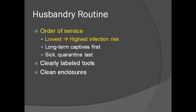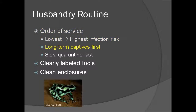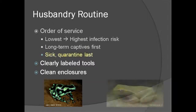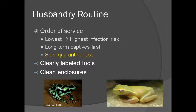In general, it is important to service the enclosures from the lowest risk of infection to the highest. For example, enclosures with long-term captives that have been thoroughly tested for infectious diseases should be serviced first, and sick animals or those in quarantine serviced last. Additionally, sick or dead animals should be removed promptly and medical care sought or necropsy performed. If separate tools are used, they should be clearly labeled and stored separately for each group of enclosures. The enclosure should be kept as clean as possible, as a buildup of organic materials can increase the risk of infectious and parasitic diseases.